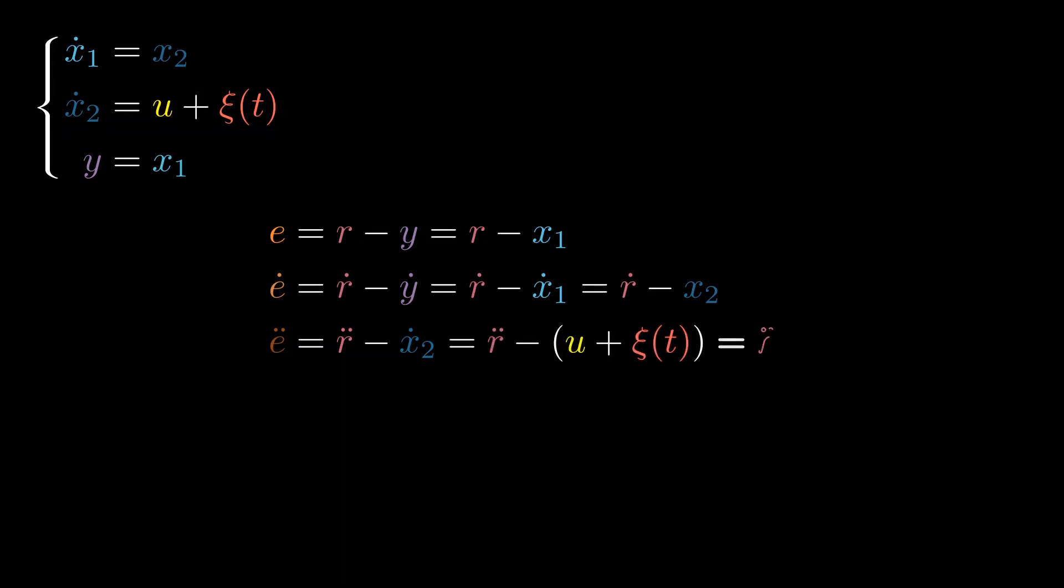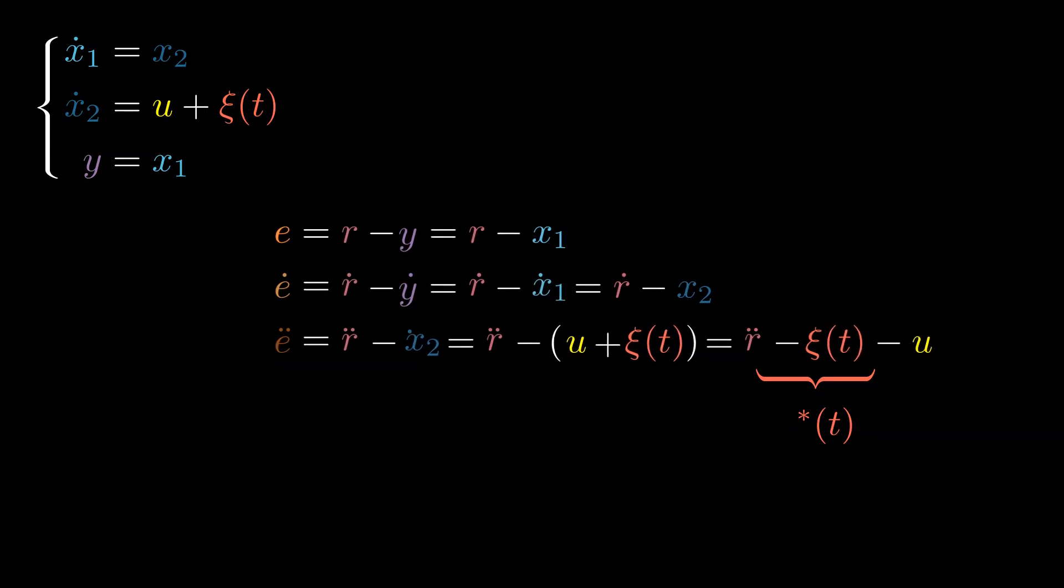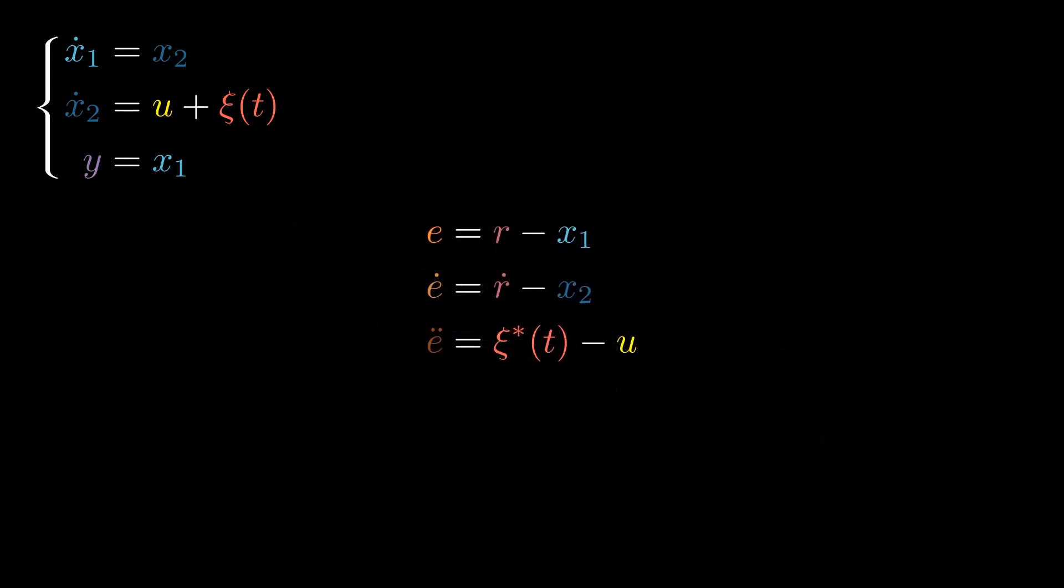Let's once again use system dynamics equation and substitute x2 dot. Finally, after simplifying and rearranging the terms, we get the complete system. Now, let's lump r double dot and ξ together and call it ξ star. That will be our even more total disturbance. After cleaning up, we get the error dynamics of ADRC controlled system.